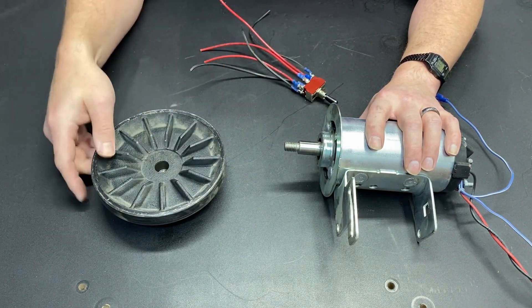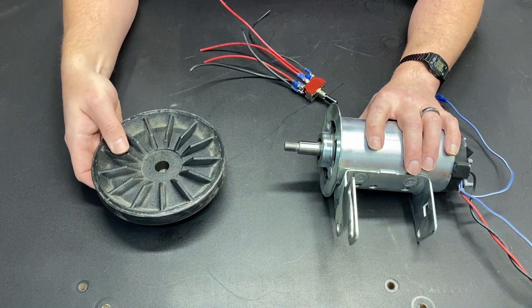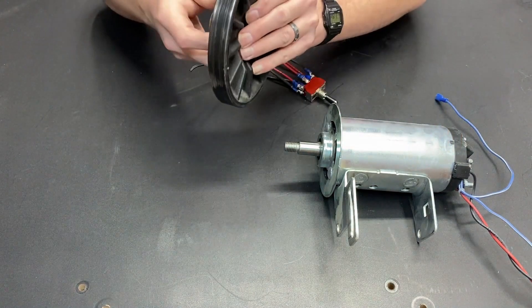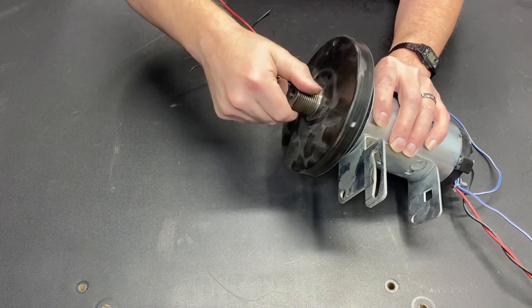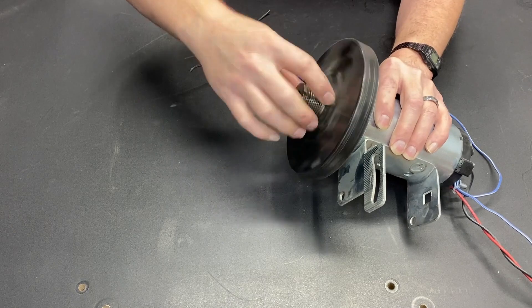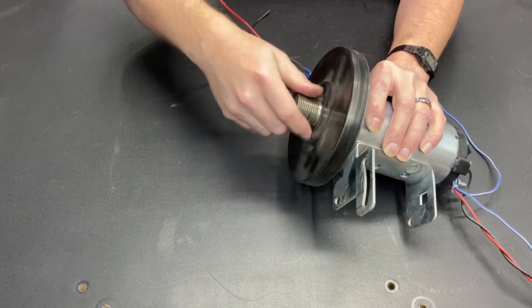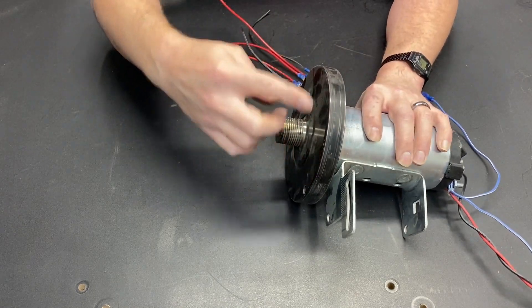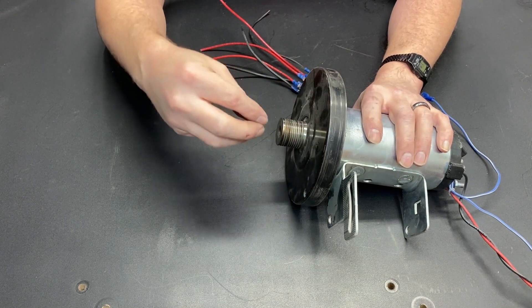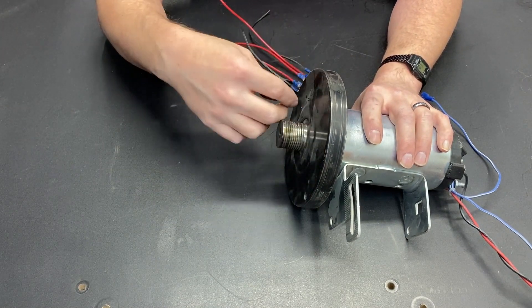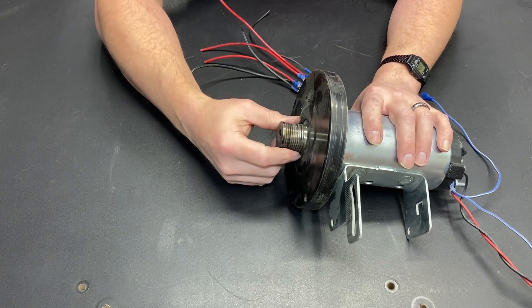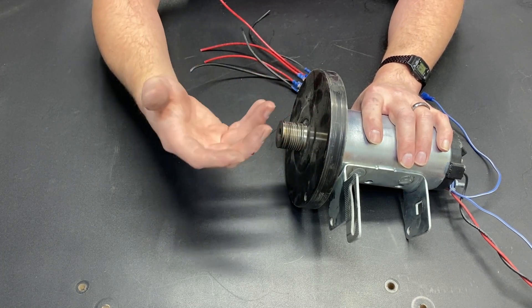This is a thread-on shaft. If we thread the shaft on, the motor goes clockwise like it's supposed to, those threads are going to stay tight. If we run it in reverse, this is going to spin off. And so, that can be a problem.